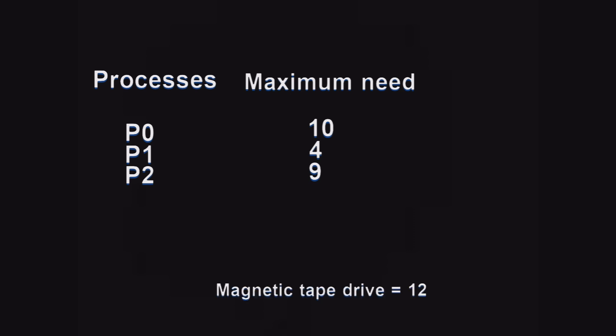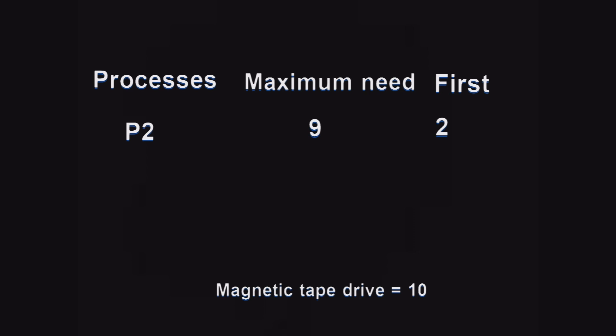First, allocate five drives to P0, two drives to P1, and two drives to P2 — leaving three drives available. By allocating two more drives to P1, we can fulfill all resources needed by P1. When a process gets all the resources it needs, it will execute and release them. So P1 executes and releases its four drives. Those released resources allow us to allocate five more to P0, which then executes and releases 10 drives that can be used to execute P2. This is called a safe sequence.